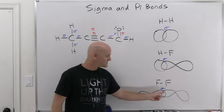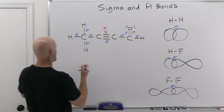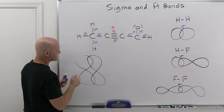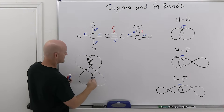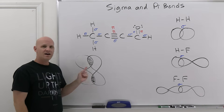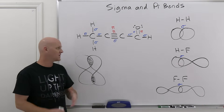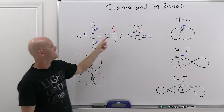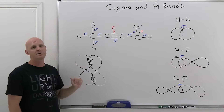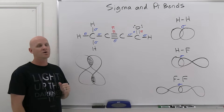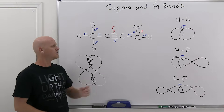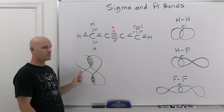Pi overlap has to be sideways overlap — not end-to-end overlap. End-to-end overlap of p orbitals is still sigma. For pi, you've got to have side-to-side overlap, and notice it overlaps on the top lobe and on the bottom lobe, but that's still just a single pi bond. You're only going to get pi bonds when you have double and triple bonds. In a double bond the first is sigma and the second is pi; in a triple bond there's one sigma and two pi bonds. Every time you see a pi bond, it's always the same thing: side-to-side overlap of p orbitals, period.